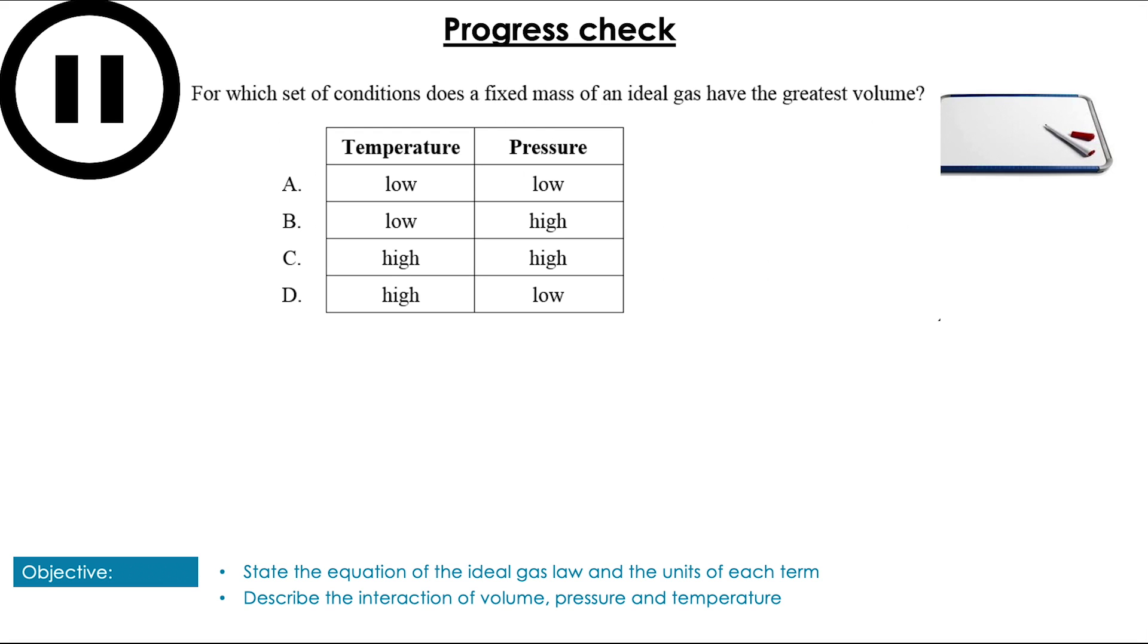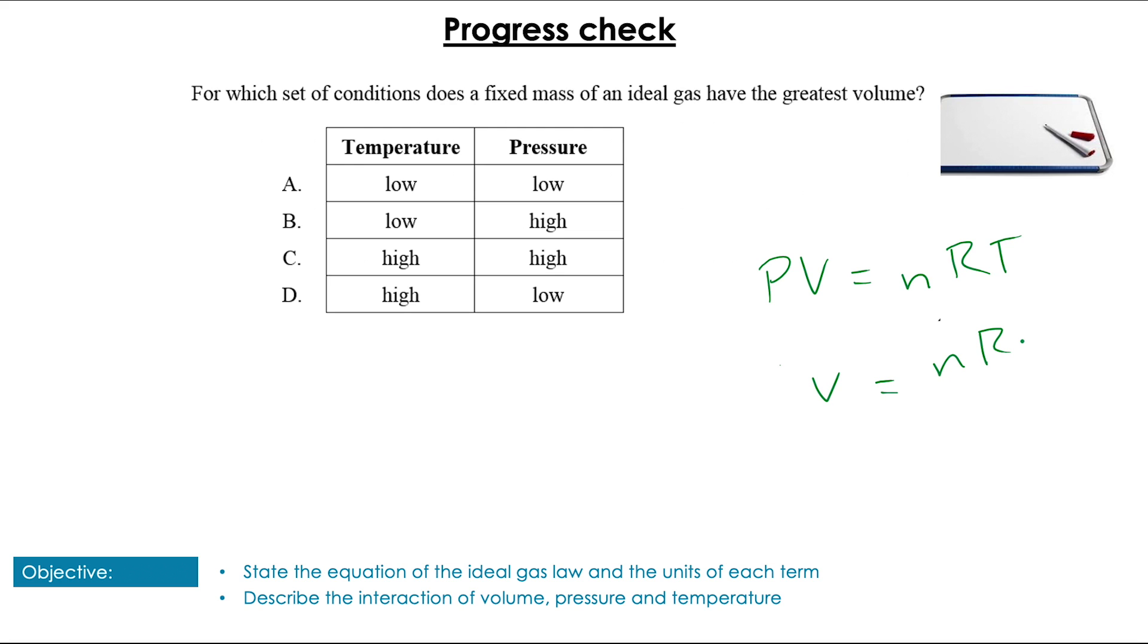Pop them up! So using our ideal gas equation, we rearrange it for volume, and we find that T is on the top and V is on the bottom of the fraction, which means that in order to get the highest value of V, we're going to need T to be very large and V to be very small. So looking here, we know it's going to be C or D, and we can see that it is going to be D.